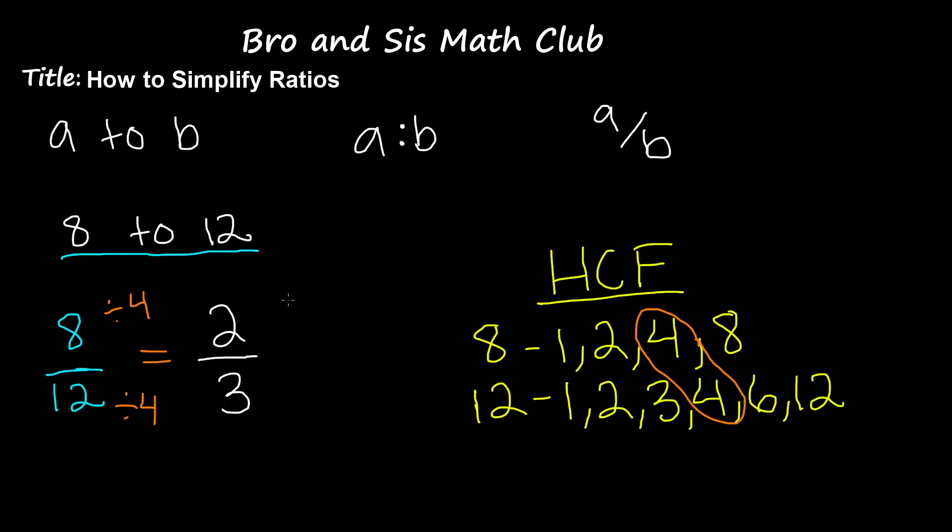8 divided by 4 and 12 divided by 4, and that gives us 2 over 3, which is 2 to 3, and that is our simplified ratio.